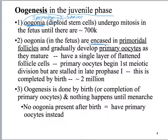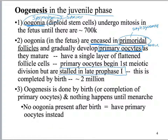The next step is that you encase those oogonia into primordial follicles. Remember that primordial follicles are lined with simple squamous epithelium — they are the holding structure. You're going to call these oogonia now primary oocytes because they have started meiosis 1 but have stalled in late prophase 1. Those cells get encased into primordial follicles and change name to primary oocytes because they start meiosis 1 but get stopped in late prophase 1.